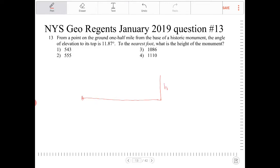A point some distance away will form 11.87 degrees as our angle of elevation there. And the horizontal distance from that point to the foot of the monument there is one-half mile.